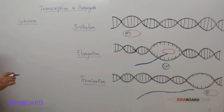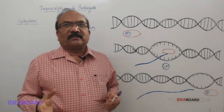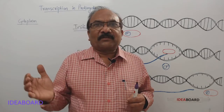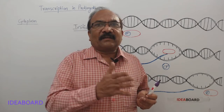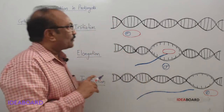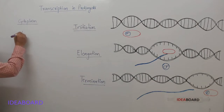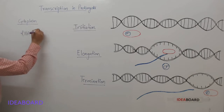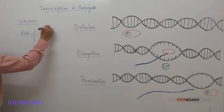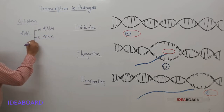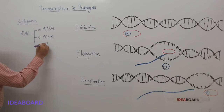Remember, transcription is required for the formation of RNA. Formation of RNA from a strand of DNA is called transcription. But which RNA? The RNAs are of three types: messenger RNA, that is mRNA; transfer RNA, that is tRNA; and ribosomal RNA, that is rRNA.